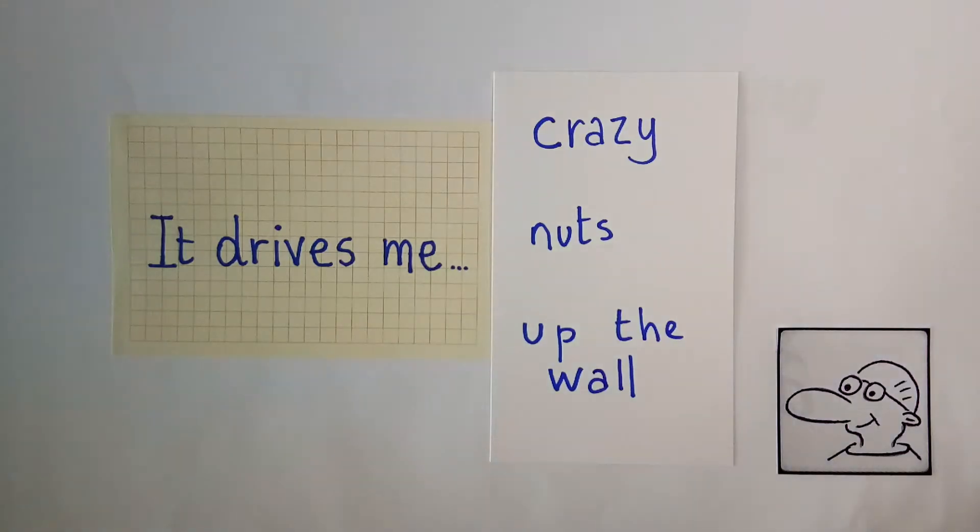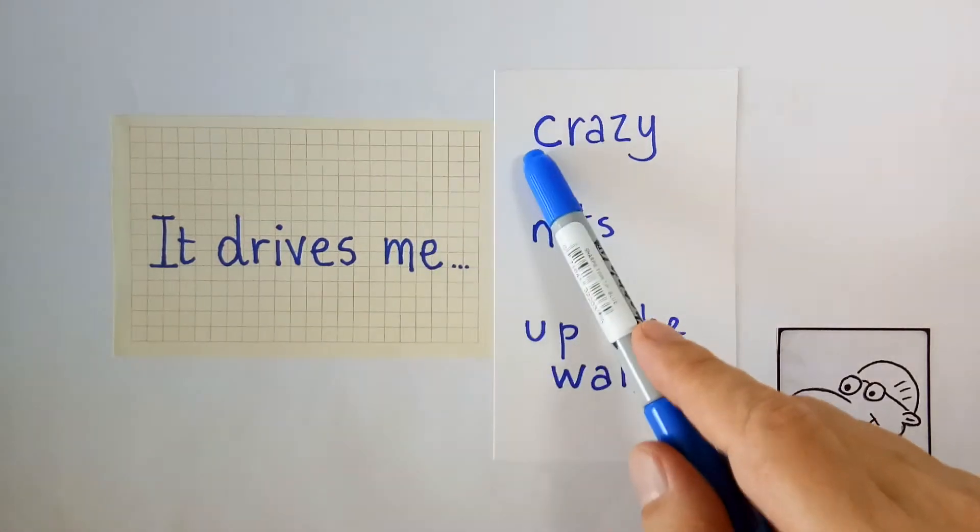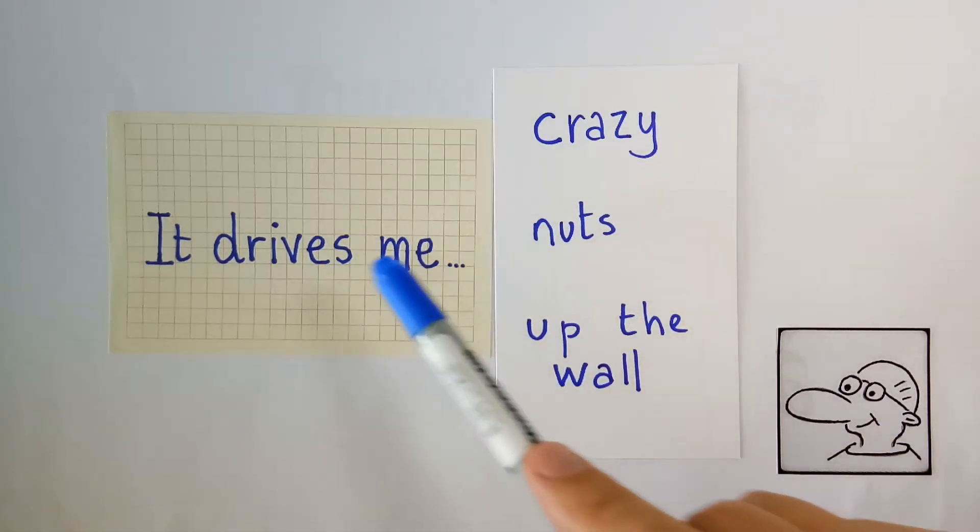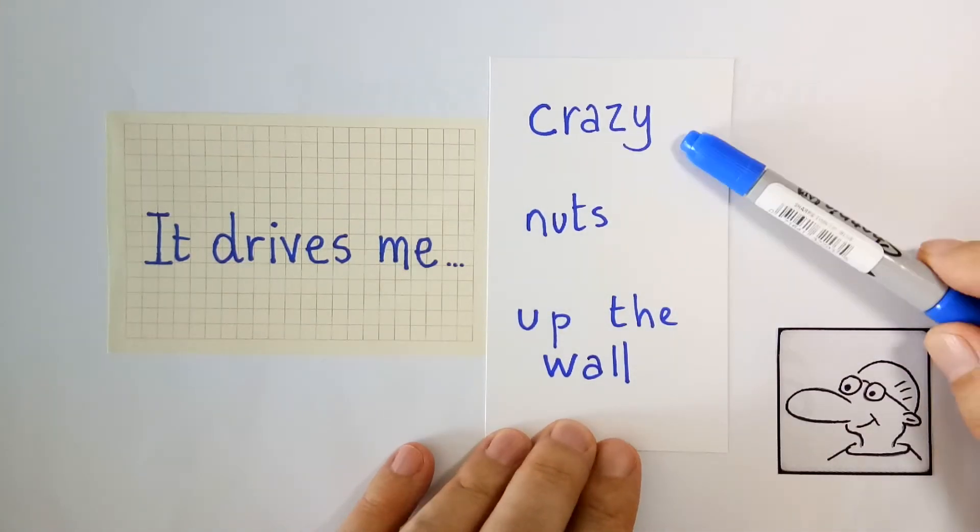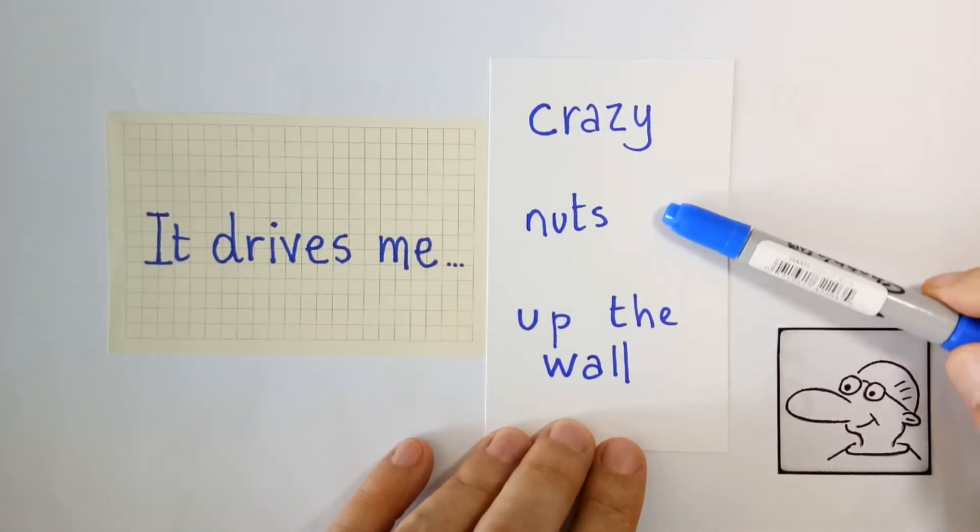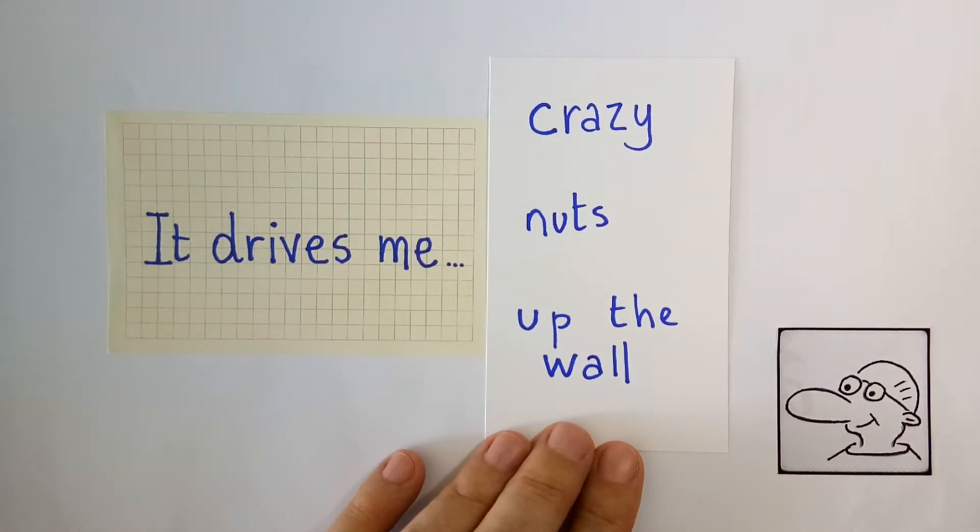Or for example, you have an important exam tomorrow and your neighbor's playing music loudly until midnight or after midnight. You can say it's driving me nuts. Please man, turn off that music. Drives me crazy, drives me nuts, it drives me up the wall. There you go. Three idioms—actually, not really. Two idioms that you can use if you are very annoyed.